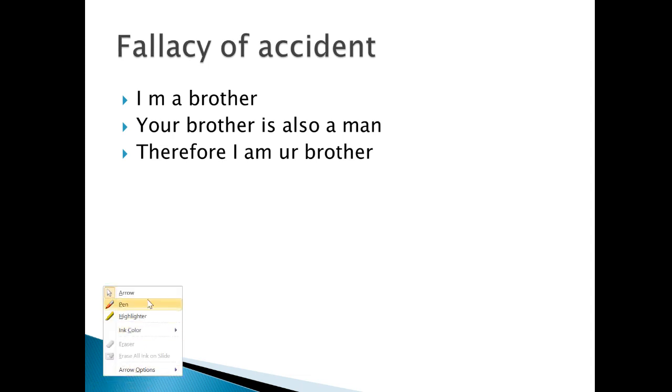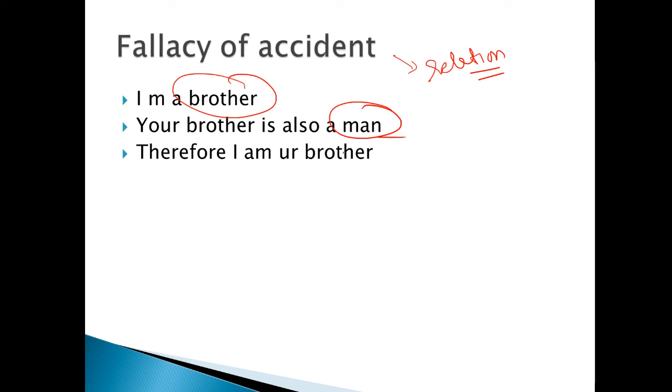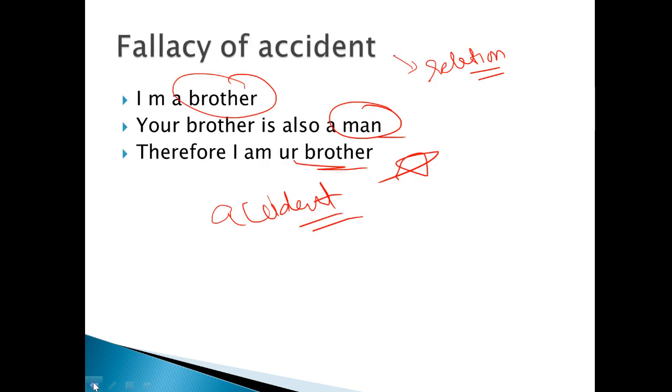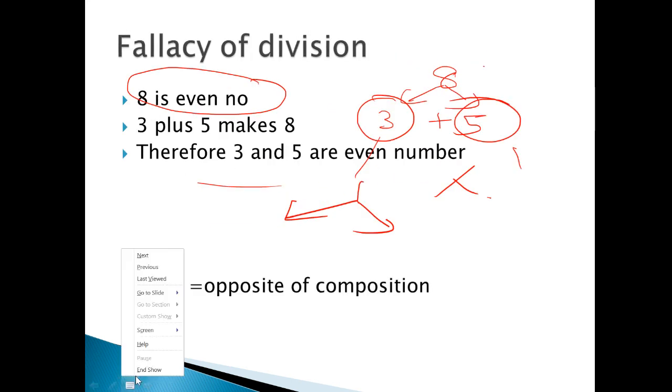Now let's see fallacy of accident. When we accidentally start making relations, we call it fallacy of accident. Like, I am a brother. Your brother is also a man. Therefore I am your brother. This becomes fallacy of accident. So this was our second part. In the next lecture video I will teach you all the MCQs for this, we'll do revision after this. So thank you guys for watching, take care.